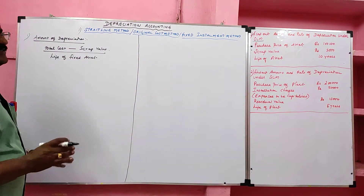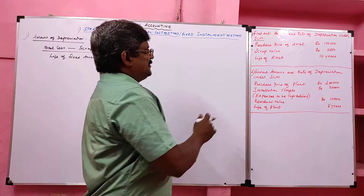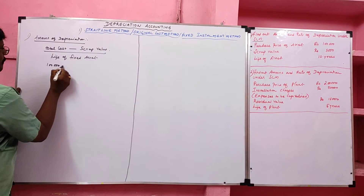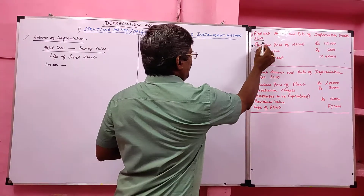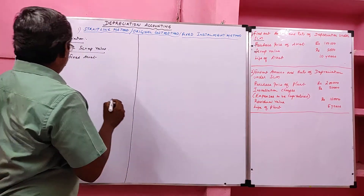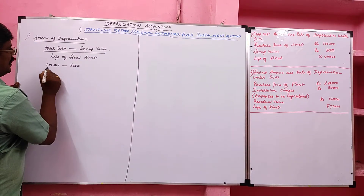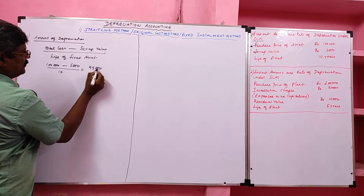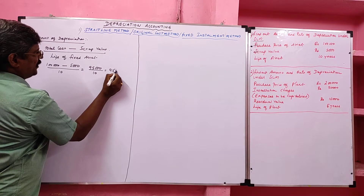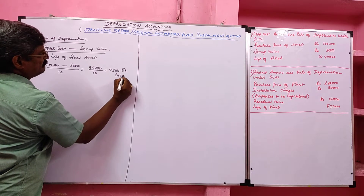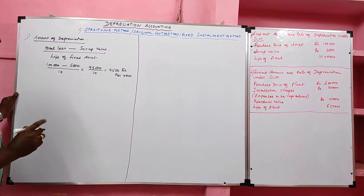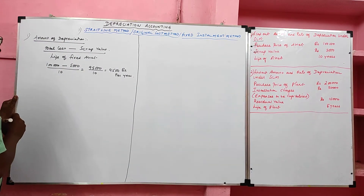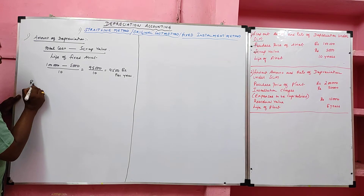The purchase price of the fixed asset is given as 1 lakh. Scrap value is given, and the life of the asset is 10 years. Deducting scrap value we get 95,000 divided by 10, which gives us 9,500 rupees per year. Every year they are charging 9,500 rupees as depreciation. This is the amount of depreciation. After finding the amount, we can find the rate of depreciation.